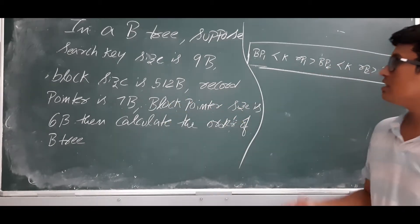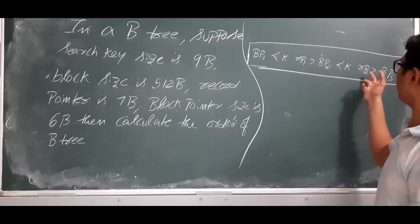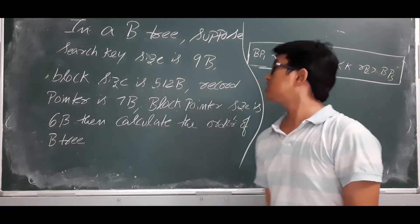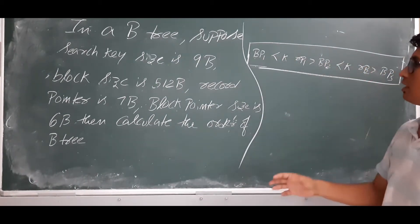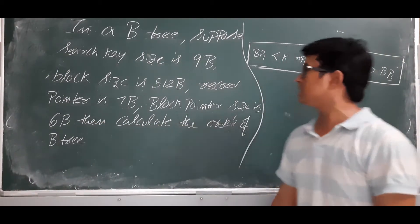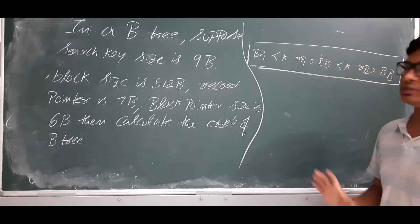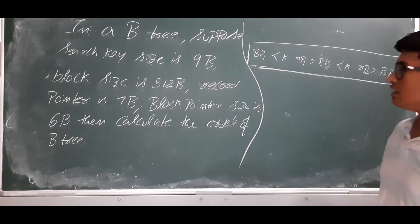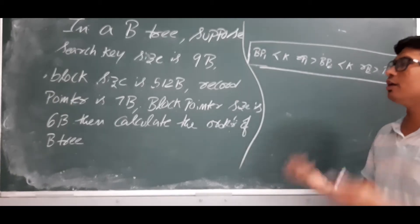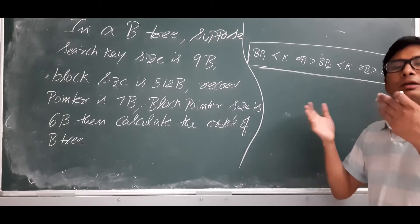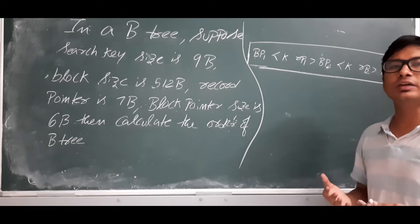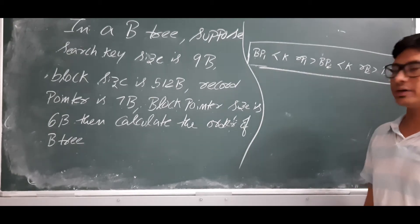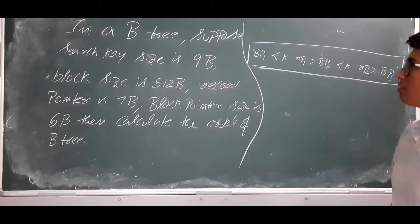The record pointer (RP1, RP2) is 7 bytes in size, and the block pointer (BP1, BP2, BP3) is 6 bytes. This is the same example I discussed when explaining the properties of a B-tree. Finally, they are asking us to calculate the order of the B-tree. The order of a B-tree is the maximum number of children a node can have.